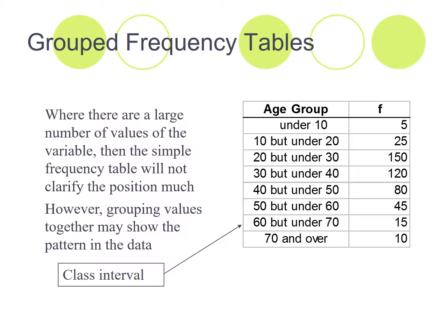So where there are a large number of values of the variable, then the simple frequency table will not clarify the position much. So grouping variables together, and you'll see the pattern of the data. And you can see quite clearly here that there's a sort of a peak here between 20 and 40, and it's clear there's very few at the lower end and very few at the upper end over 70.